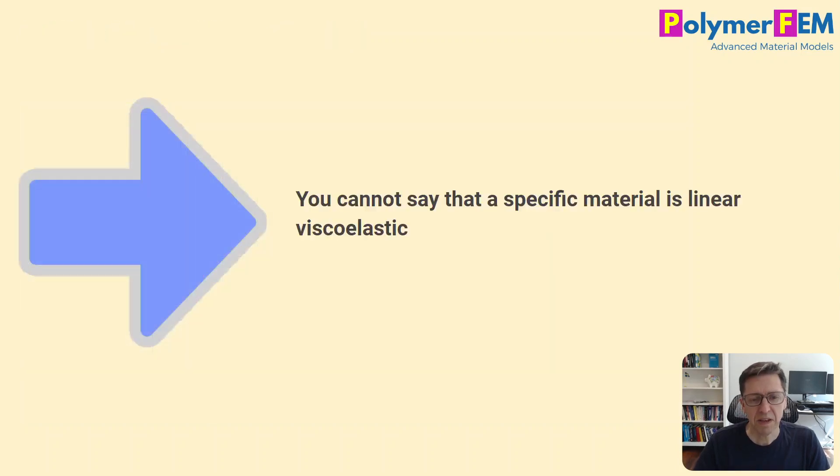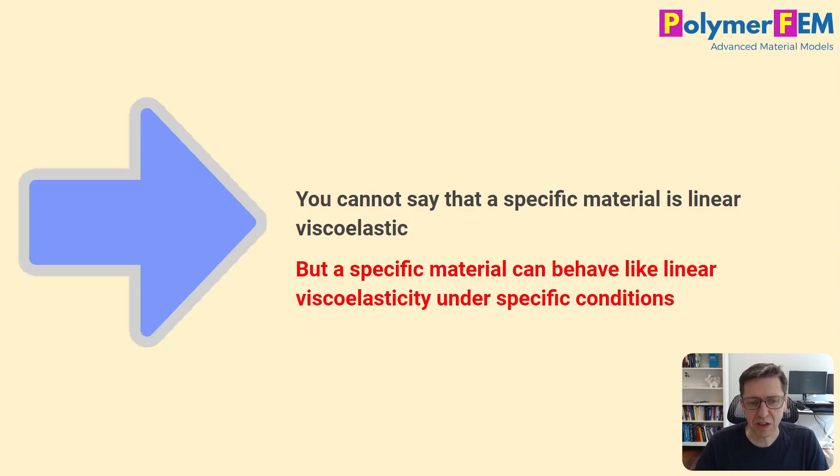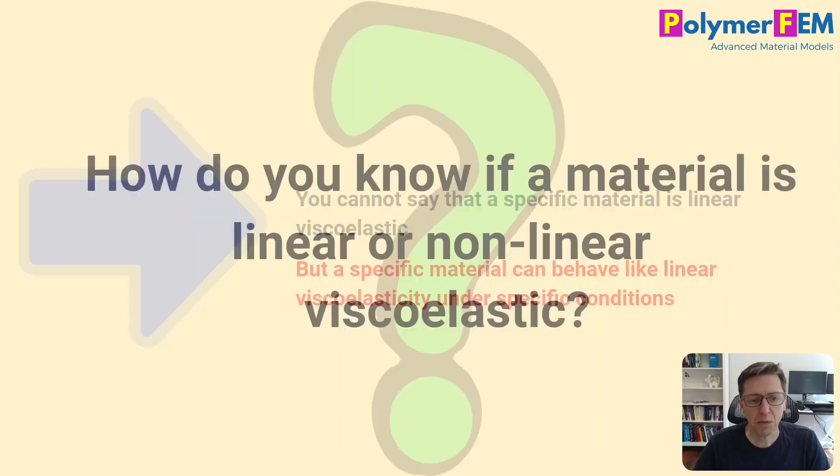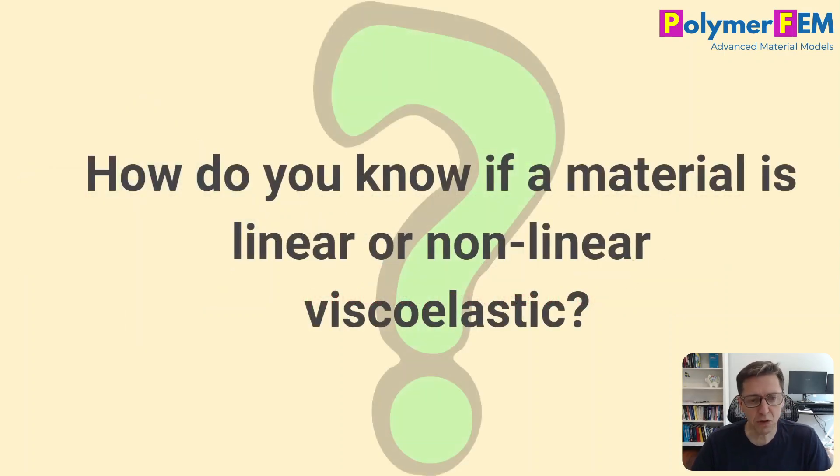So we can't actually say specifically that the material is linear viscoelastic because it depends on the conditions. We can say that under certain conditions, a material may behave in a linear viscoelastic way. So back to our main question, how do we then determine if a material is linear or nonlinear viscoelastic?